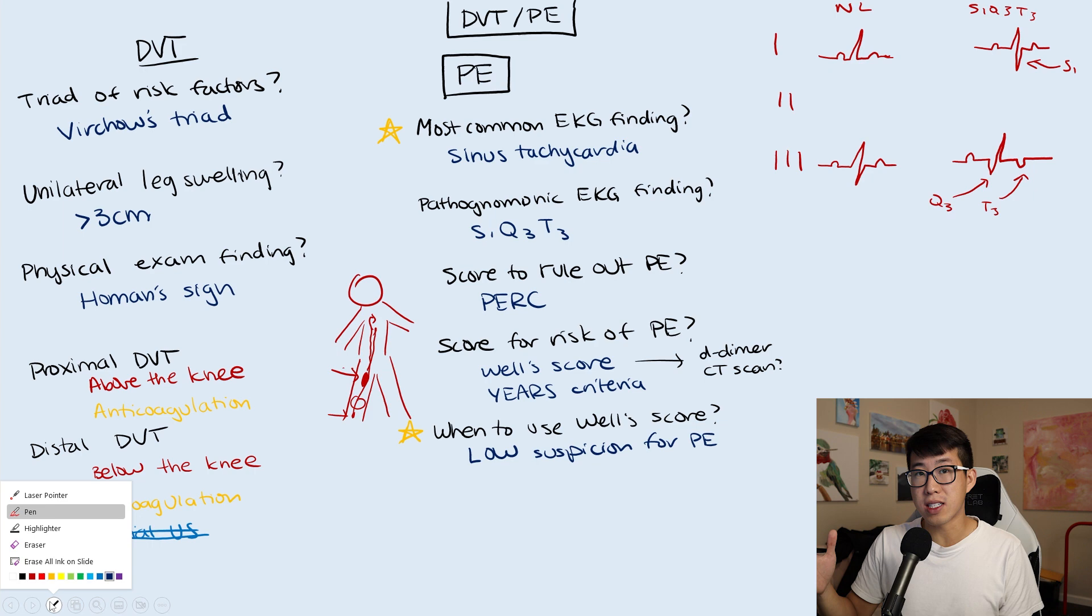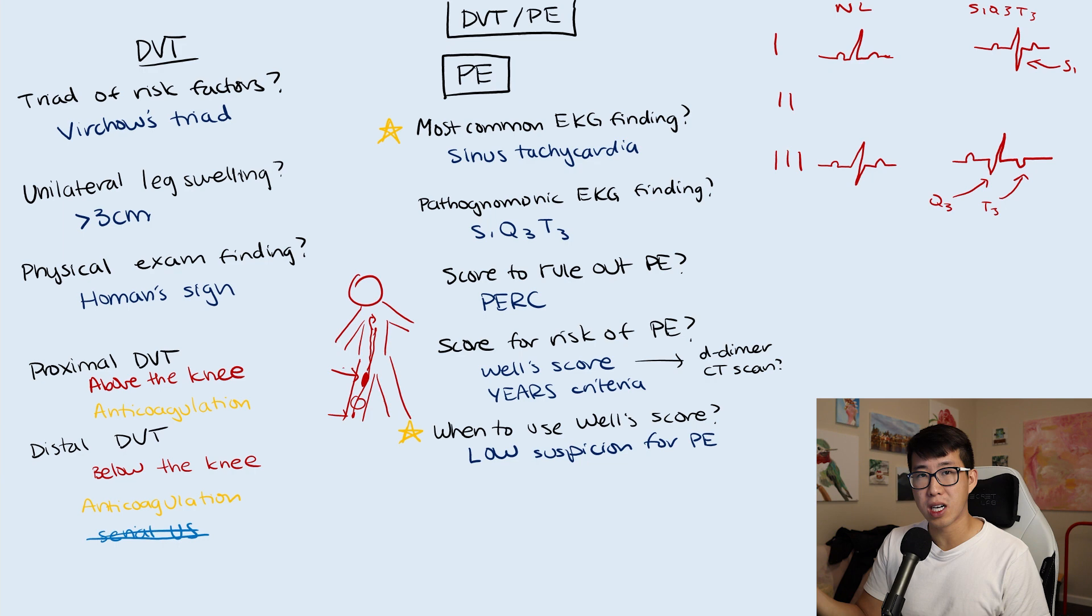I can't emphasize this enough: only use Wells score if you have low suspicion for PE. If you have high suspicion, just go straight to CT scan. If we have low suspicion, that's when Wells becomes useful. If the Wells score is less than four, then we can get a D-dimer. If the D-dimer is low, we don't have to get the CT scan. But if it's greater than or equal to four, go straight to CT scan.